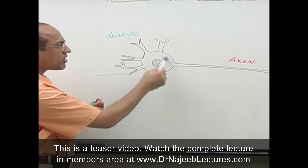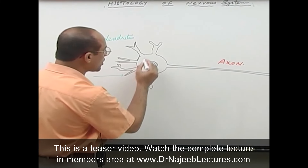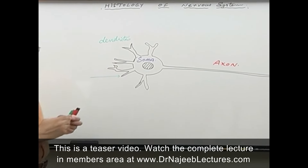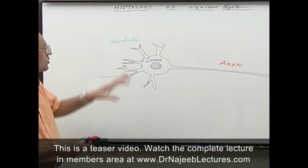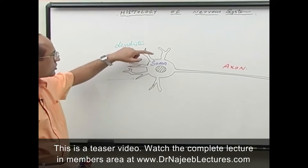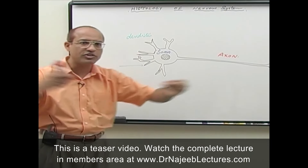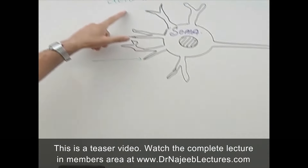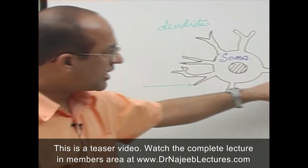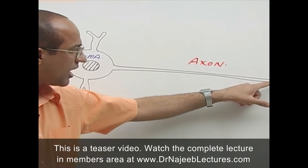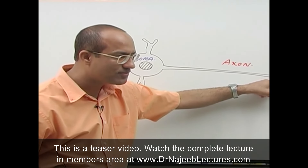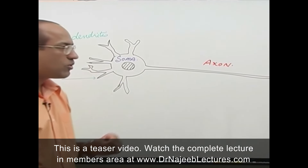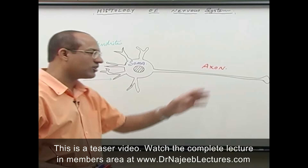So every typical neuron consists of a cell body — also called soma — and extensions from the cell body. Some shorter extensions are called dendrites, and one special very long extension is called the axon. The real question is: what is the difference between dendrites and the axon?